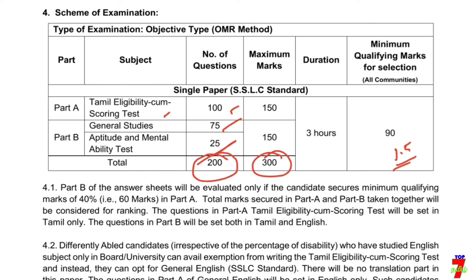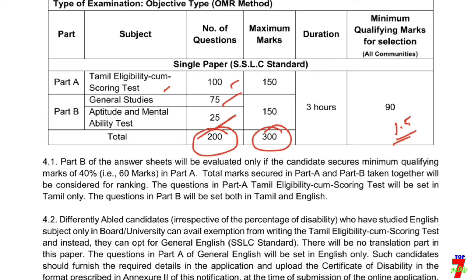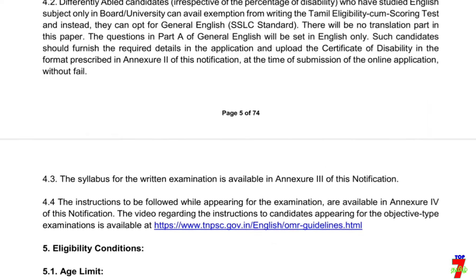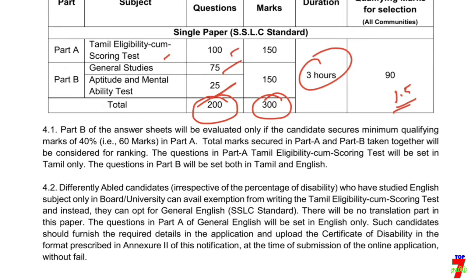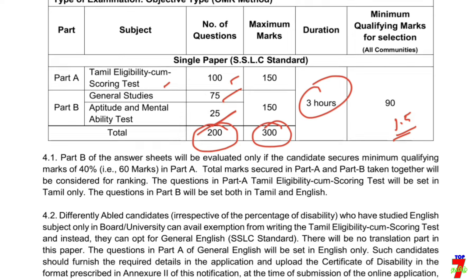If you ask about 300 marks and 200 questions, the time is 3 hours, and each question is 1.5 marks. That's Part A. In Tamil, there is 40 percentage cutoff. So in Tamil you need a mark above 40 percentage. Part B is correct — in Part B, there are General Science marks, about 40 percentage. That's the rank of General Science.